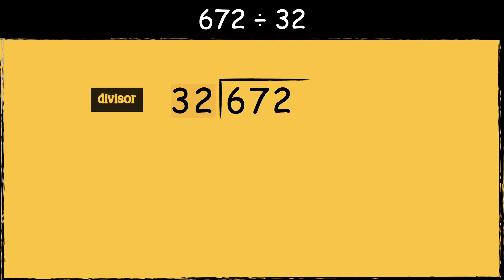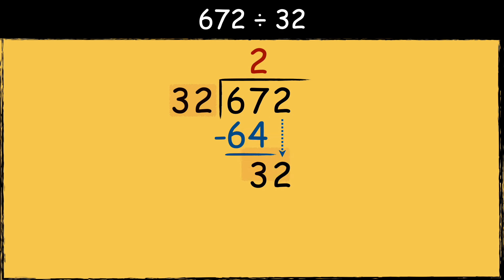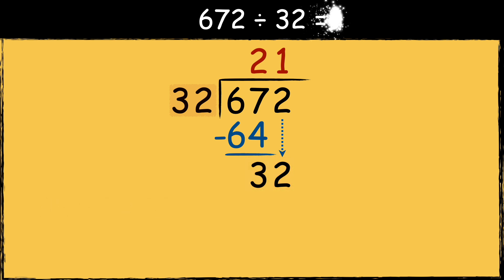We need to find out how many times the divisor fits into these numbers. 32 doesn't go into 6, so we chunk the first two numbers. How many times does 32 go into 67? 32 goes into 67 twice, so 2 goes at the top. Next we find the remainder: 67 take away 64 is 3. Now we bring the last digit down. Finally, 32 goes into 32 once, so 1 goes at the top. The answer is 21.